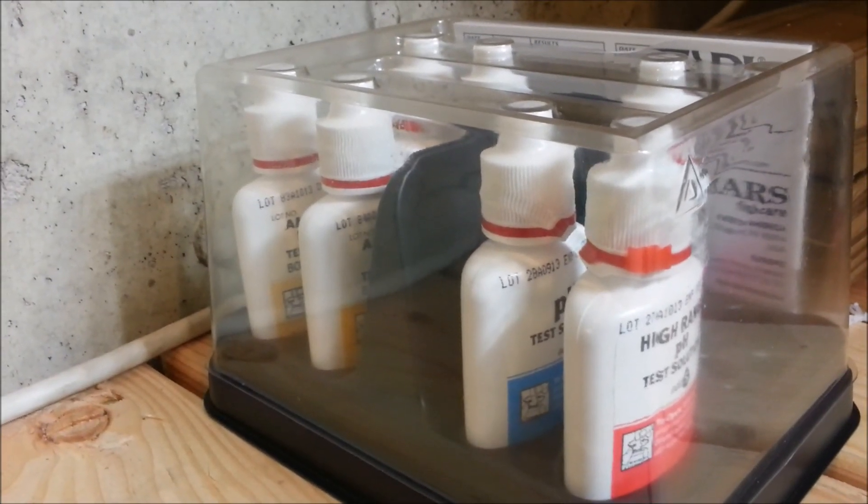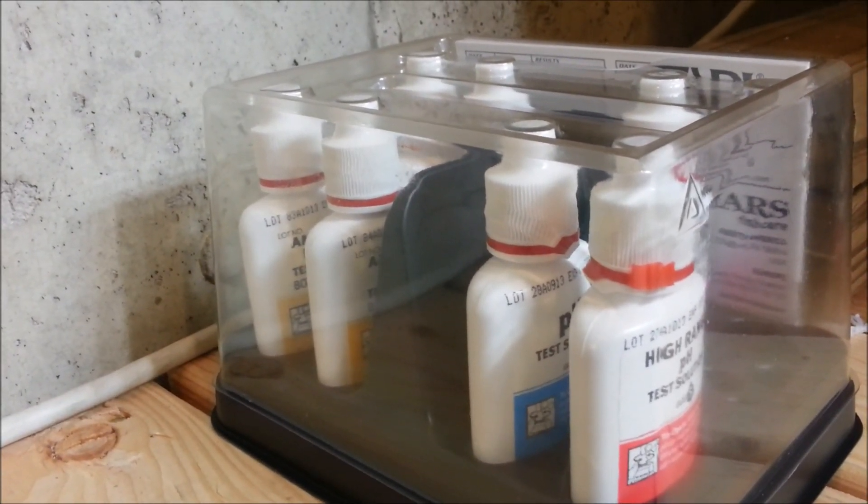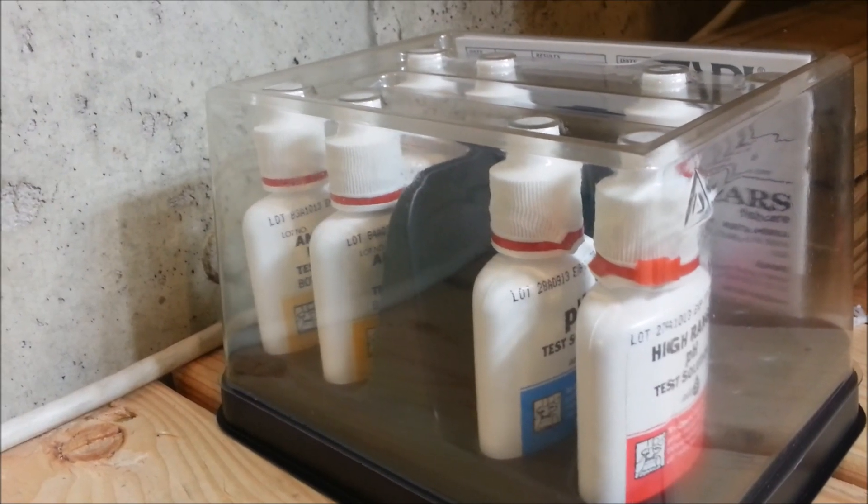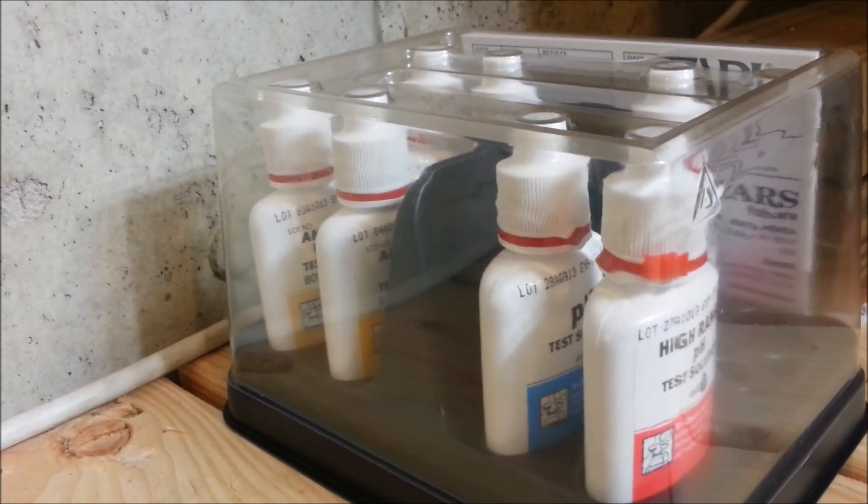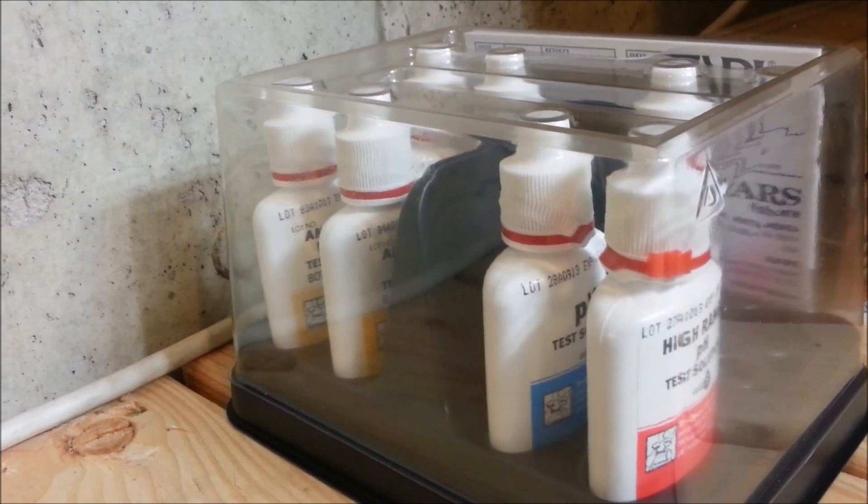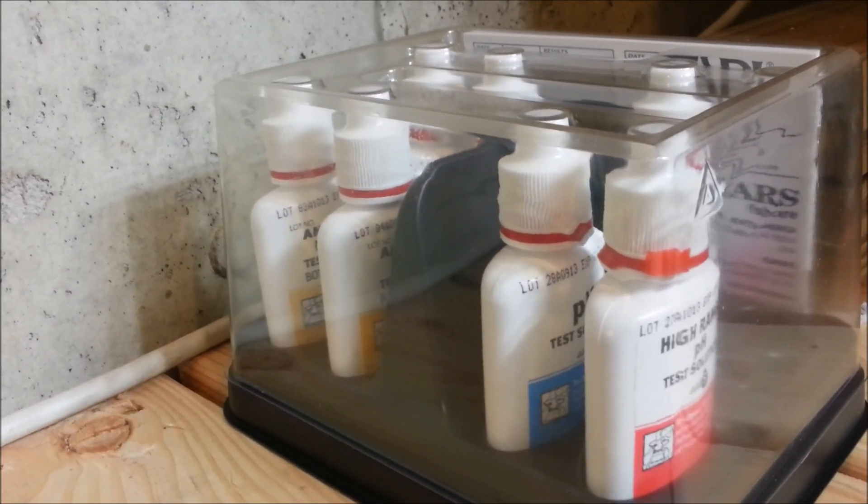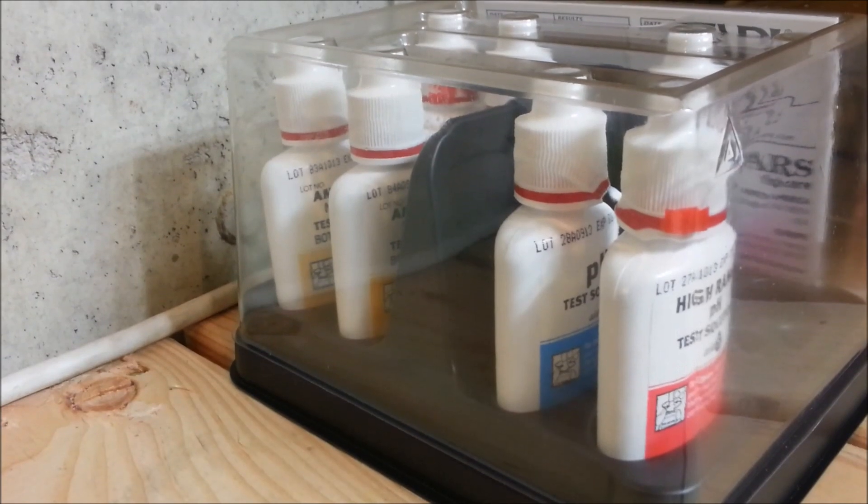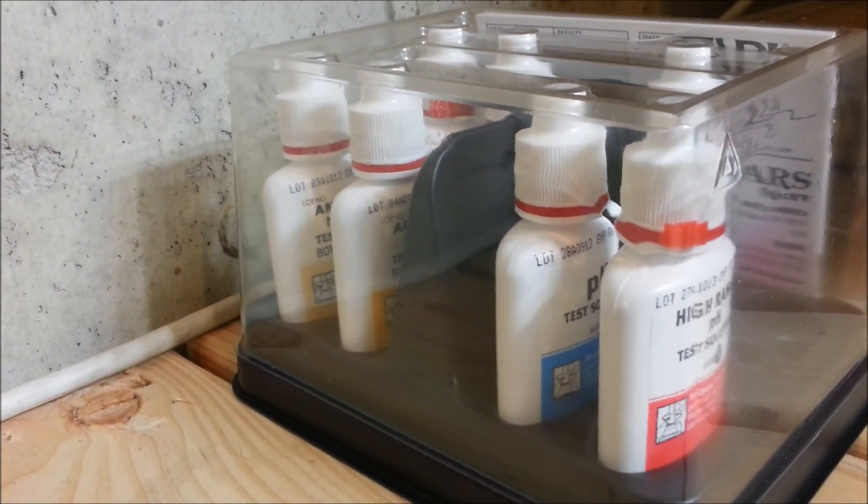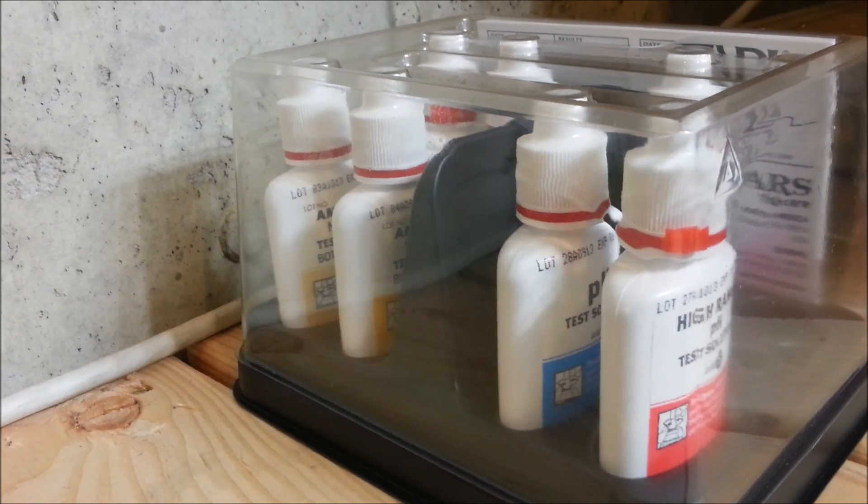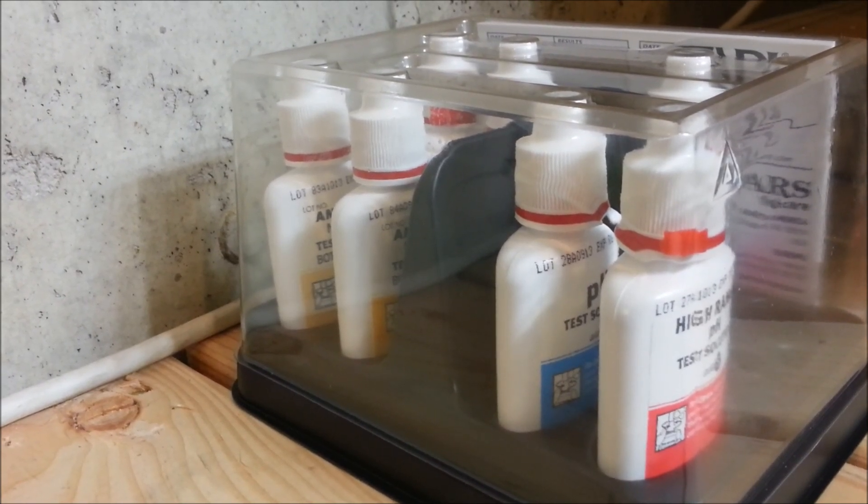Something I forgot to mention too in the first part - the kit comes with seven bottles of the solution to do the various tests. Based on the amount of drops that you're putting in each time, I would estimate you can probably do about 75 to 100 tests before you probably run out of some of the solution. The nitrate test, I think each bottle you have to put in 10 drops - that's the one you have to use the most of, so you probably run out of that first. You can order replacement individual bottles of the test solution.